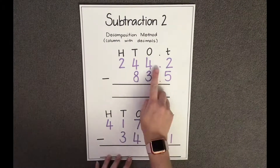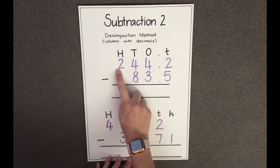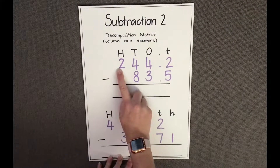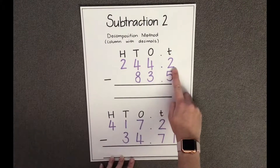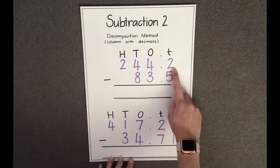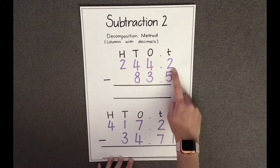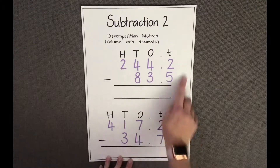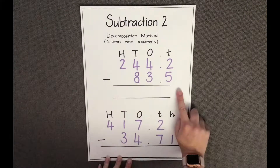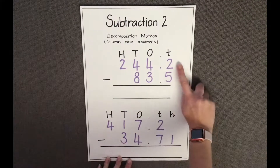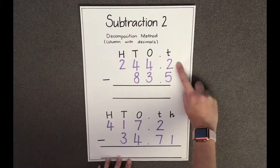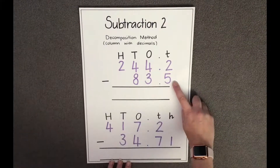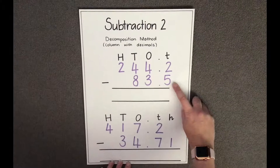On the left hand side of the decimal point we have our whole numbers, and on the right hand side of the decimal point we have our decimal parts. Let's start by reading the first question: 244.2 take away 83.5.